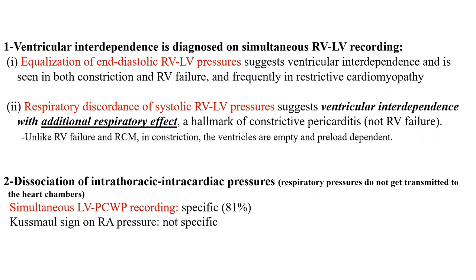This slide summarizes what I just explained. There are two hemodynamic phenomena in constrictive pericarditis. The first is ventricular interdependence, diagnosed on simultaneous RV-LV recording, with two findings: equalization of RV-LV end-diastolic pressure, and respiratory systolic discordance. The hallmark of constriction is ventricular interdependence with additional respiratory effect. You have ventricular interdependence in RV failure as well, but without that respiratory effect — that additional respiratory effect is what defines constriction.